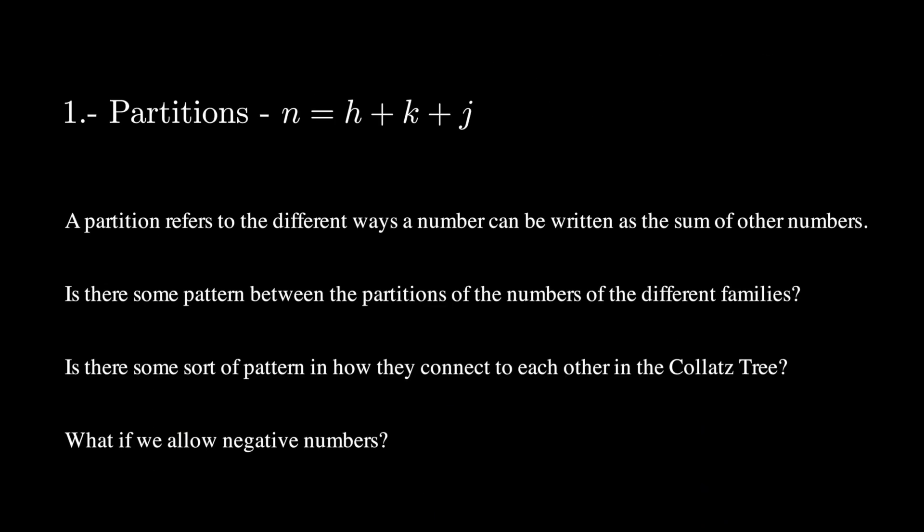The first one is about partitions. A number can be written as the sum of other numbers in many different ways. These are called partitions. And in this case, we are looking at partitions made by three numbers. Is there some sort of pattern between the partitions of the vertices of the different families and how they connect to each other? What about partitions with negative numbers? I mean, the Collatz tree can be expanded into the negatives, after all.